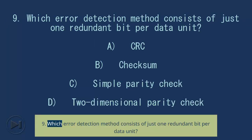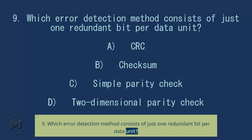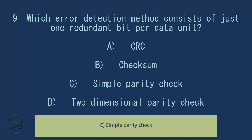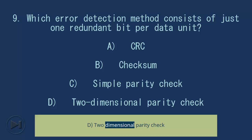Question 9: Which error detection method consists of just one redundant bit per data unit? A) CRC, B) checksum, C) simple parity check, D) two-dimensional parity check.